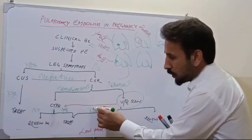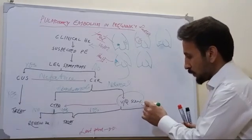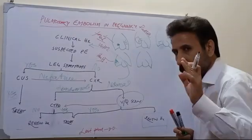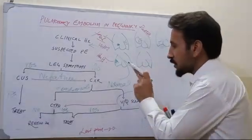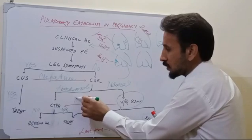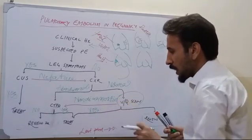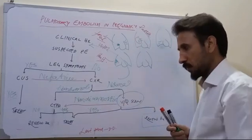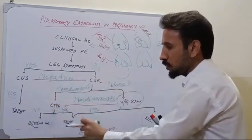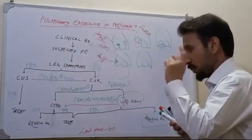If the VQ scan shows evidence of pulmonary embolism, treat the patient. If there is no evidence of pulmonary embolism, the patient history must be reviewed and alternative diagnoses looked for. If the clinical suspicion is high, the X-ray is normal, and the ventilation-perfusion scan is non-diagnostic, you must proceed to CTPA. If the CTPA shows evidence of pulmonary embolism, treat the patient. If not, review the patient and look for other alternative diagnoses which may mimic pulmonary embolism.